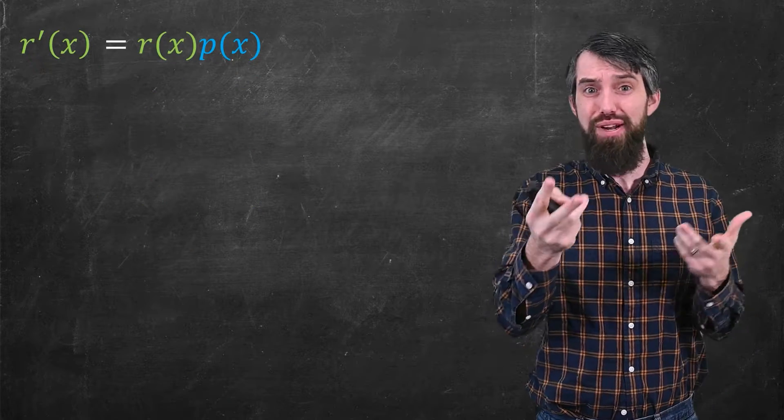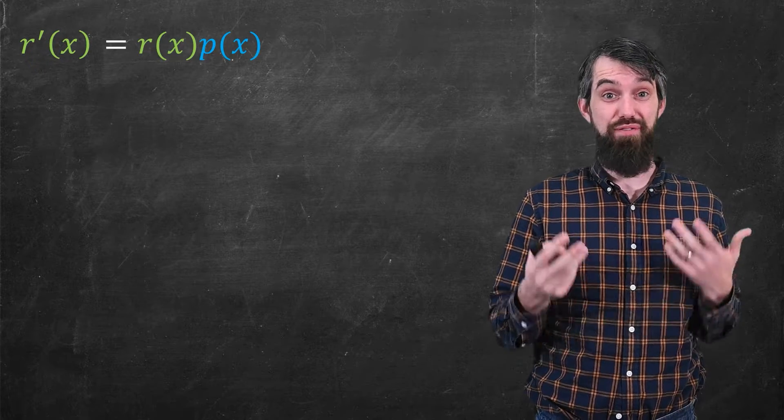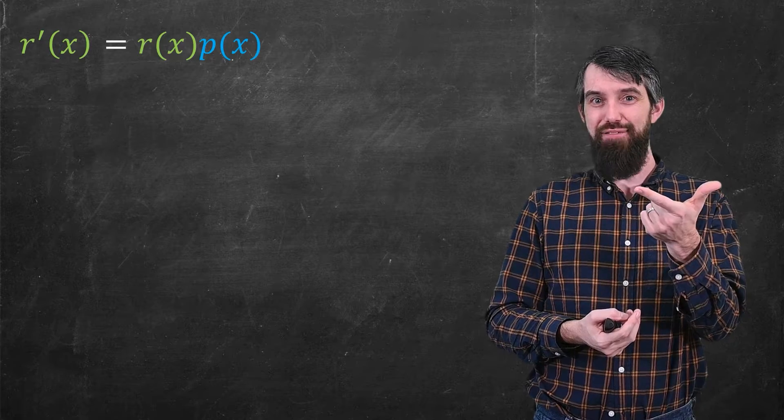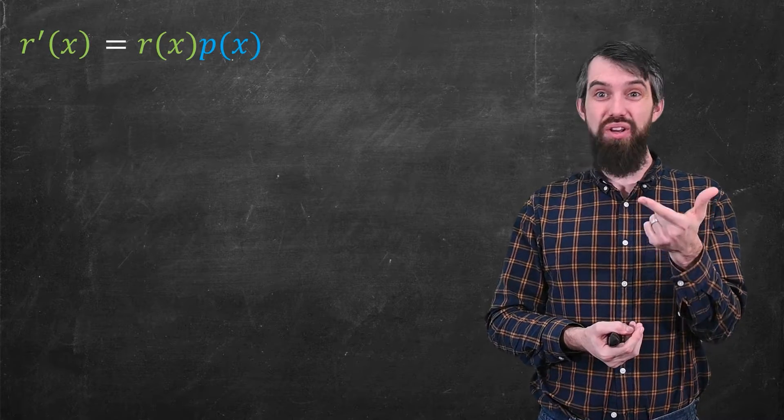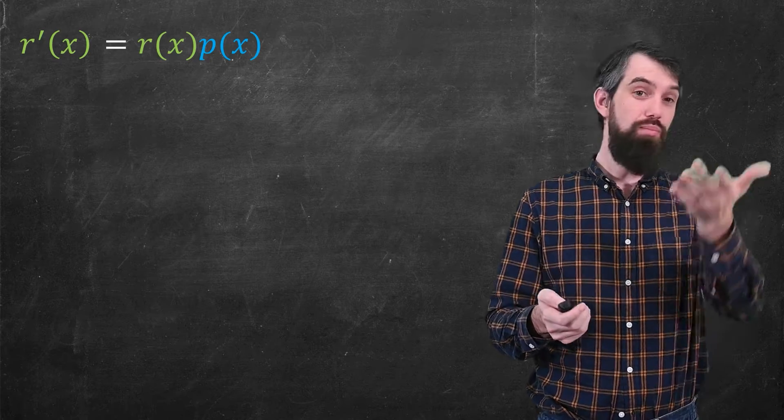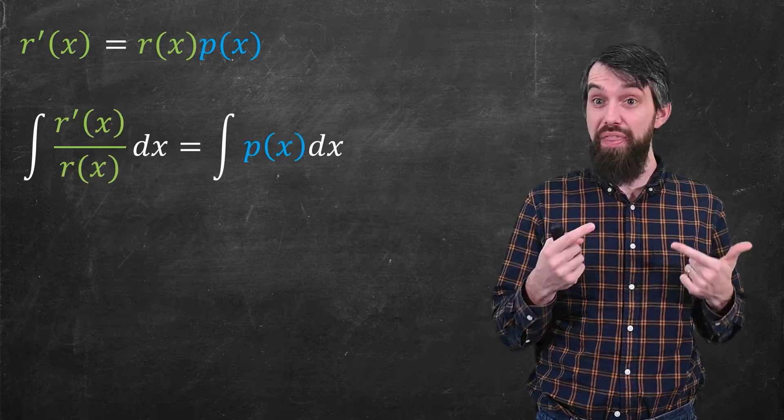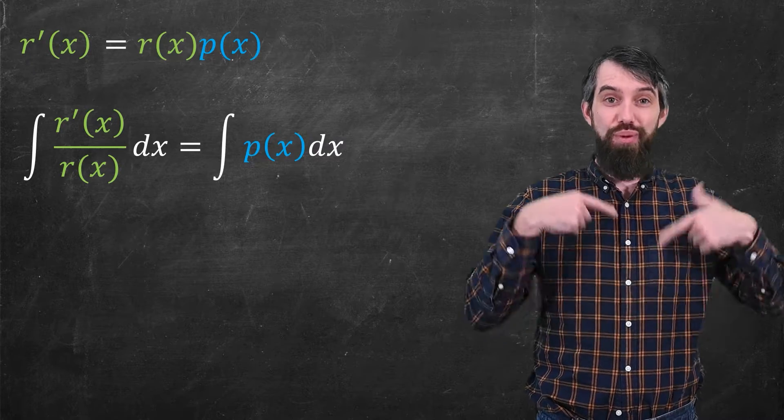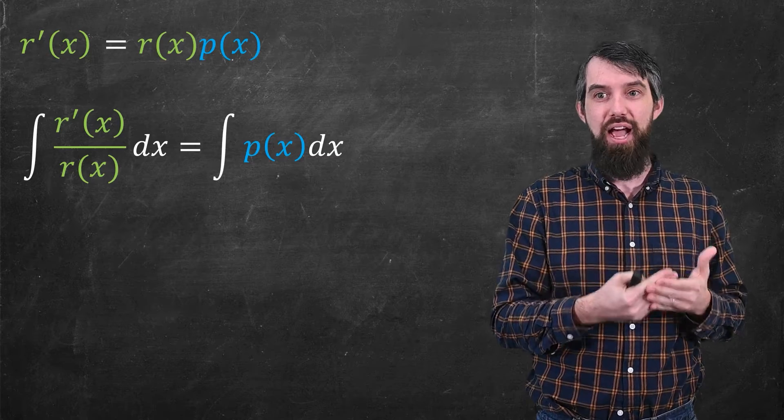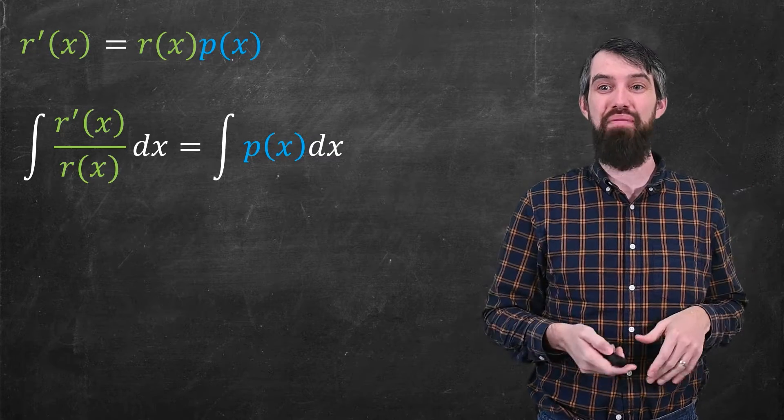This here is a differential equation. It's actually a first order differential equation in the variables r and x. In fact, I can see more than that. It's not only just a first order, it's a separable first order. So let me just go and separate it using the method of separation of variables. I'm going to divide out by the r(x) on both sides, and then I'm going to integrate with respect to x on both sides. So I get r' over r on the left, and then the integral of p(x) on the right. So now I'm solving some integral.